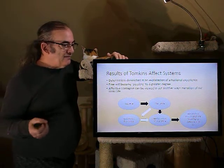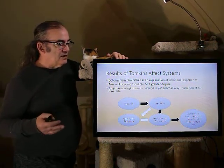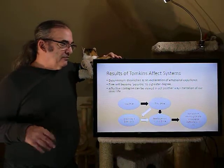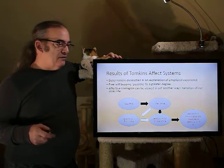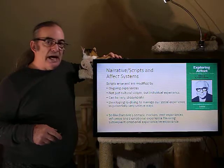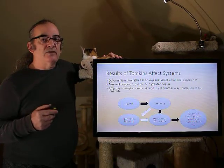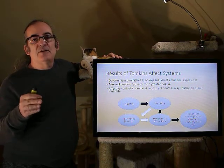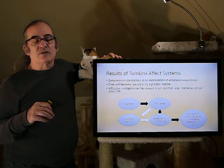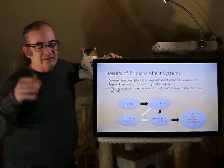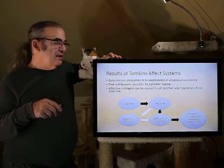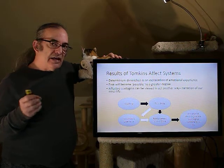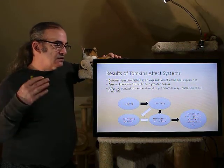With Tomkins's affect system, determinism diminishes as an explanation for emotional experience and we set it aside. Free will becomes possible to a greater degree, because experience can be very idiosyncratic and is shaped along our individual history. This gets to the issue of whether free will can be somewhat individualized on the basis of non-conscious selection. And affective contagion, which we've discussed in several ways, can be viewed in yet another way — as the narration of our inner life.